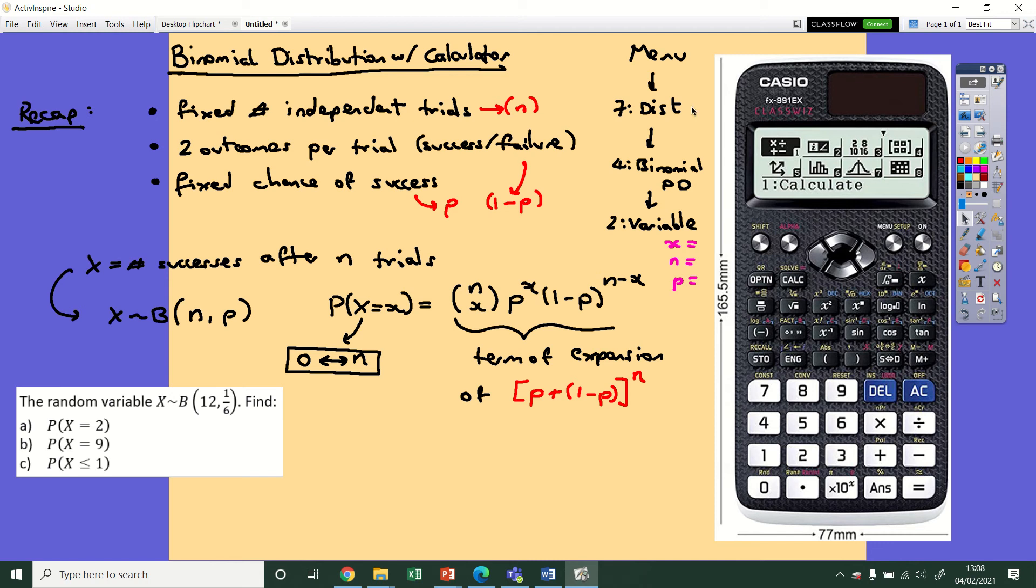After you've gone to that, it's then going to have a list of different options. You're going to want the fourth one down, which is called binomial pd—pd standing for probability distribution. So then you press that. It will then ask you if you want a list or variable for your data; you're going to want a variable. And then it's going to bring you to the final page, which asks you to put in the value of x, n, and p in the correct order.